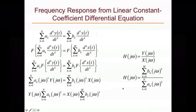Pulling Y and X out and arranging into Y(jω)/X(jω) gives H(jω). The result is H(jω) = [Σ from k=0 to M of bₖ·(jω)^k] / [Σ from k=0 to N of aₖ·(jω)^k], a rational function in jω with the numerator coefficients from x and the denominator coefficients from y.